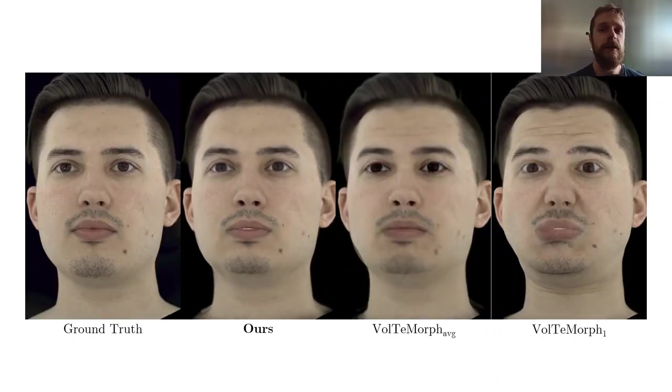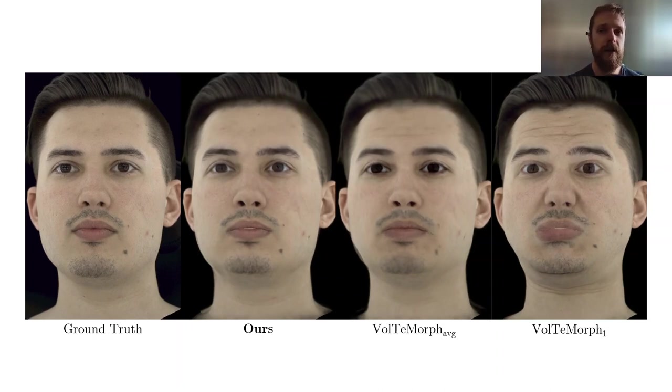Our method generalizes beyond other approaches, such that it can render expression-dependent wrinkles on the face. For example, one of the baselines Voldemort cannot render flat forehead as it averages out the texture from all the frames, while our approach dynamically adds them during the animation.